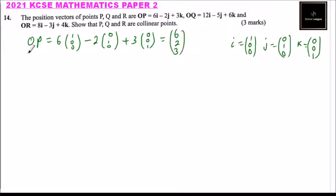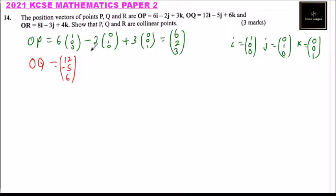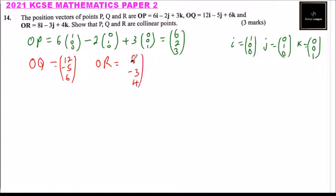Similarly, we can write OQ and OL in coordinate form. Substituting the unit vectors, OQ gives (12, -5, 6) and OL gives (8, -3, 4). So those are the position vectors in coordinate form.